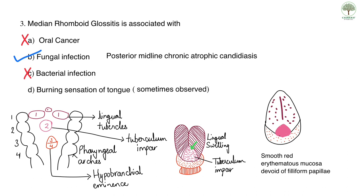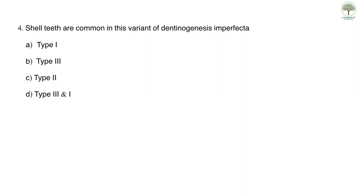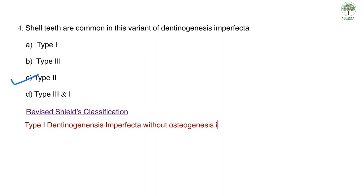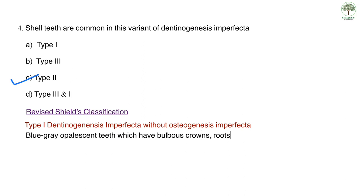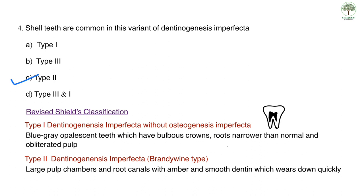Question four: shell teeth are common in which variant of dentinogenesis imperfecta? The correct answer is type 2. Extensive studies have proven dentinogenesis imperfecta is a distinct entity from osteogenesis imperfecta, leading to a revised Shields classification with only two types. Type 1 presents with blue-gray opalescent teeth, bulbous crowns, narrower than normal roots, and obliterated pulp chambers. Type 2, the brandywine type, has large pulp chambers and root canals with amber smooth dentin that wears down quickly giving the classic shell teeth appearance.